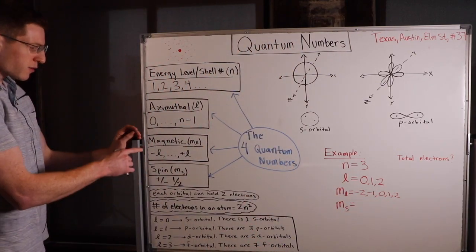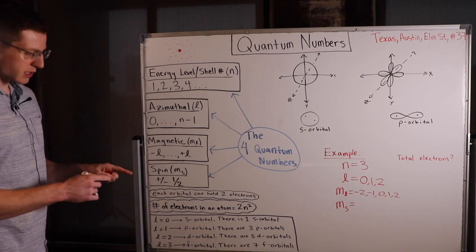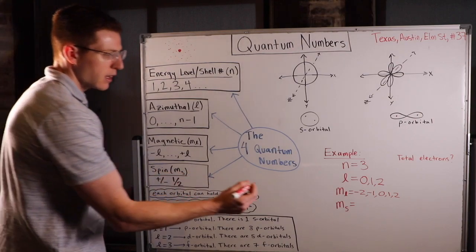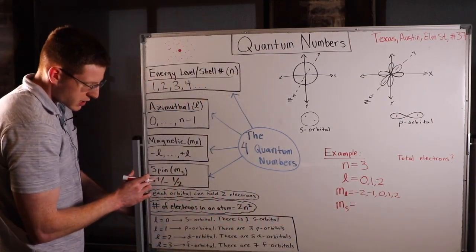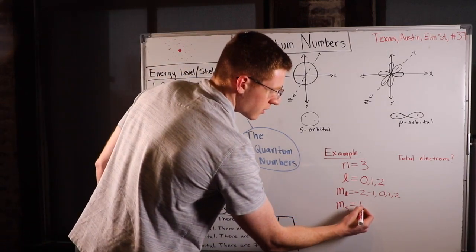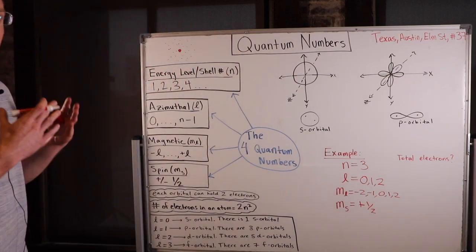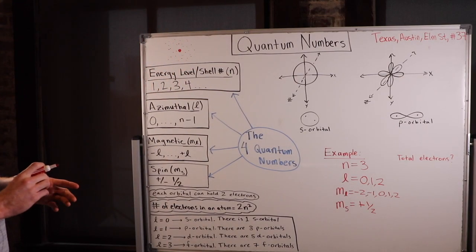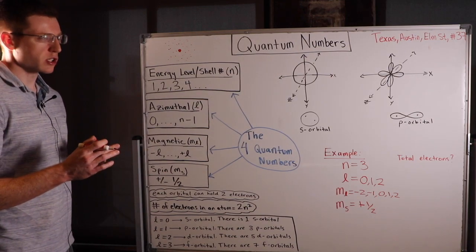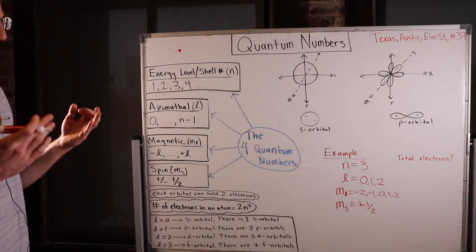From there, we pick a spin number. This is like knowing the electron's house number — it's only going to be for one specific electron. We can either pick positive 1/2 or negative 1/2. Let's say we pick positive 1/2. Now we have a specific electron address, and only one electron will fit that address — just like only one person can have your address, assuming one person lives in each house.